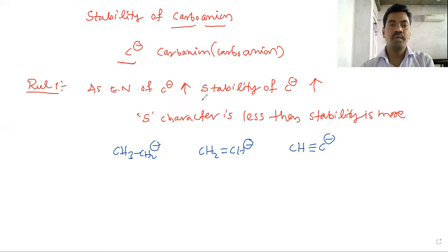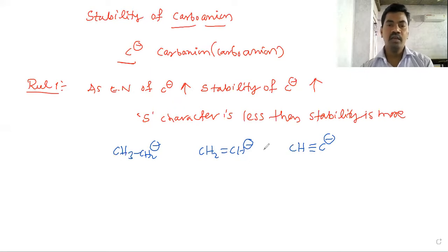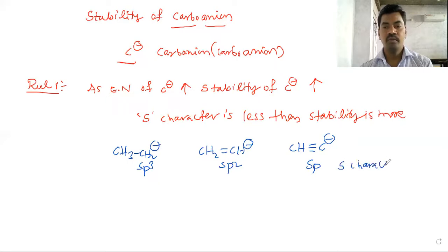Here we consider the s-character and here we consider the electronegativity. More s-character means more electronegativity. If s-character is more, then electronegativity is more, and therefore the carboanion is more stable.